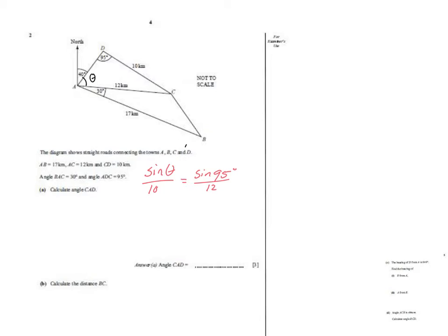For more detail on the sine rule, check my website explainingmaths.com. Working out theta, the full unrounded answer is 56.0101540844, which rounds to 56.1 degrees to one decimal place. I'll put that value in the diagram because it may be needed later on.